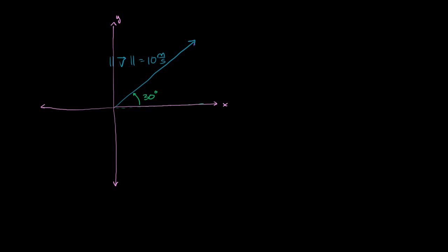What I want to do in this video is show you a way to represent a vector by its components. This is sometimes called engineering notation for vectors. It's super useful because it allows us to keep track of the components of the vector, and it makes it a little bit more tangible when we talk about the individual components.